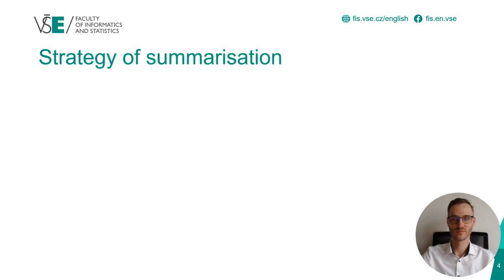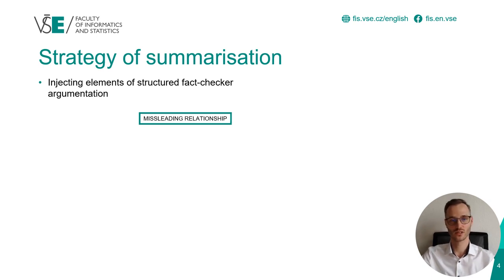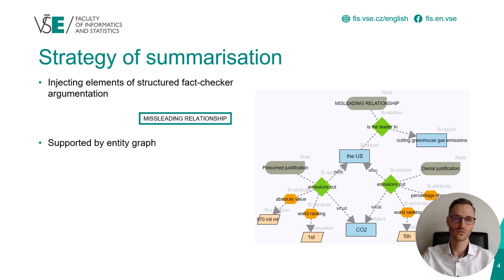Our approach of injecting elements of structured fact-checker argumentation consists of categorization of argumentation elements — one of which is the missing relationship, for example. We supported the creation of the argumentation elements by entity graphs, like this one in proof notation.